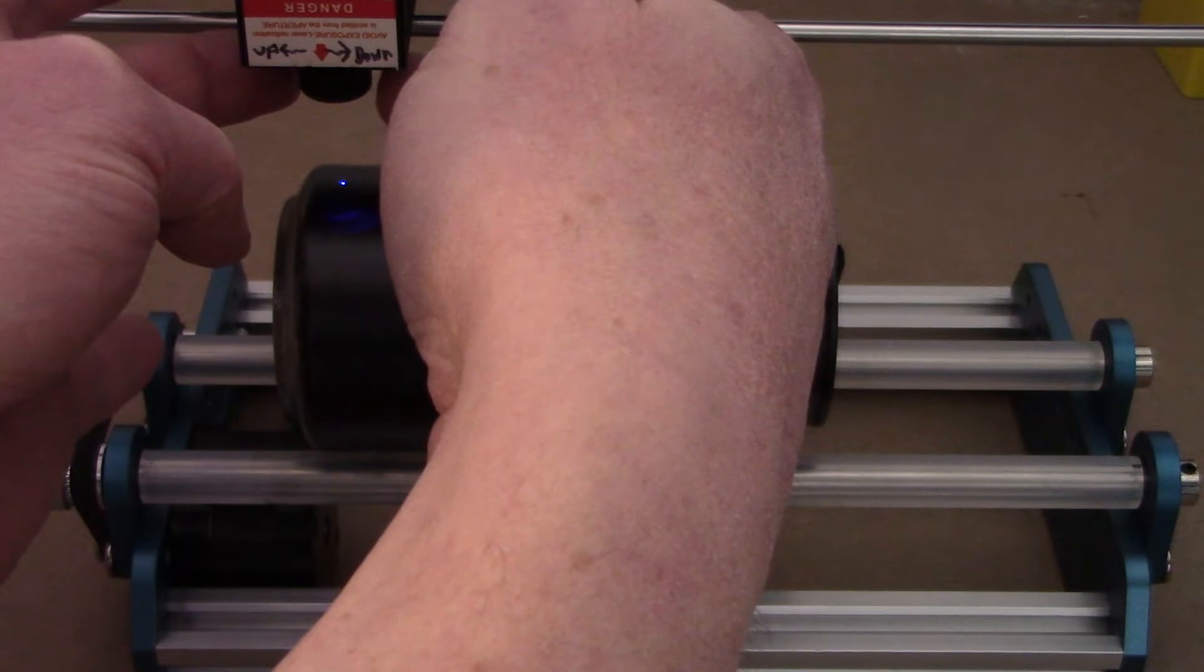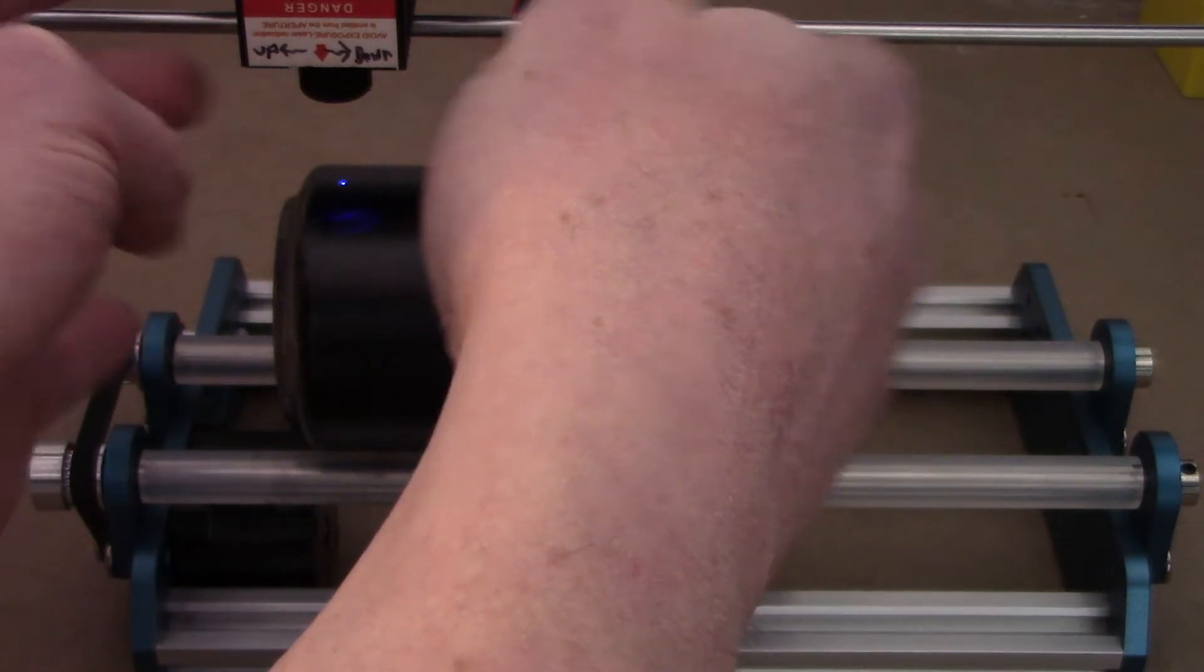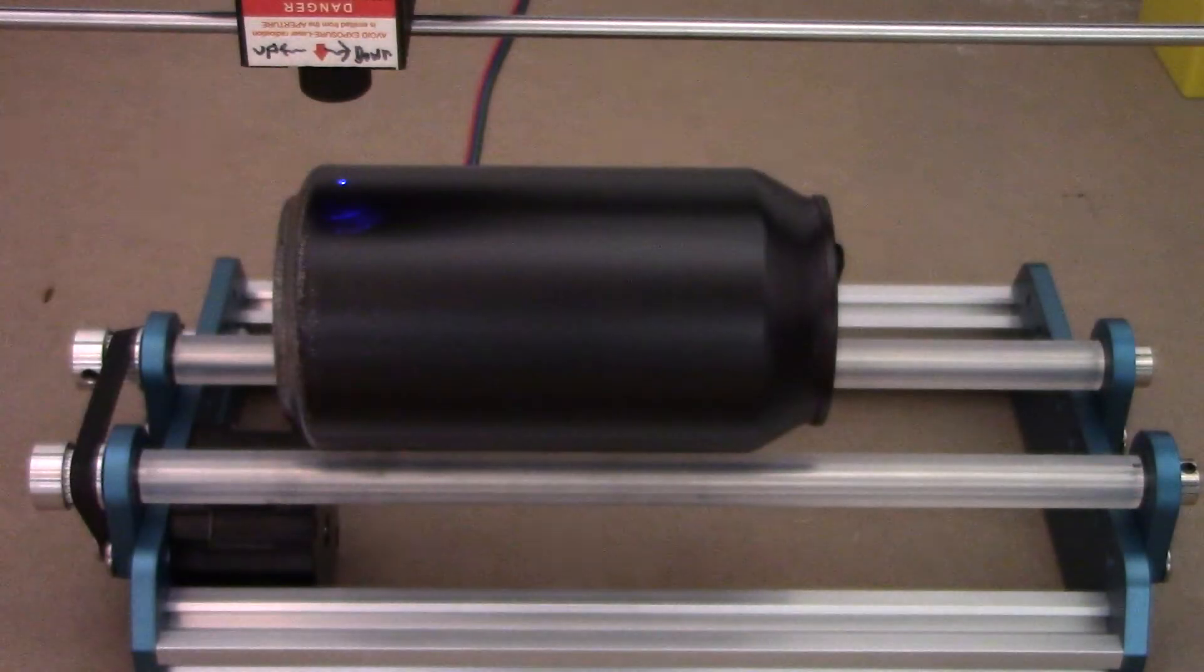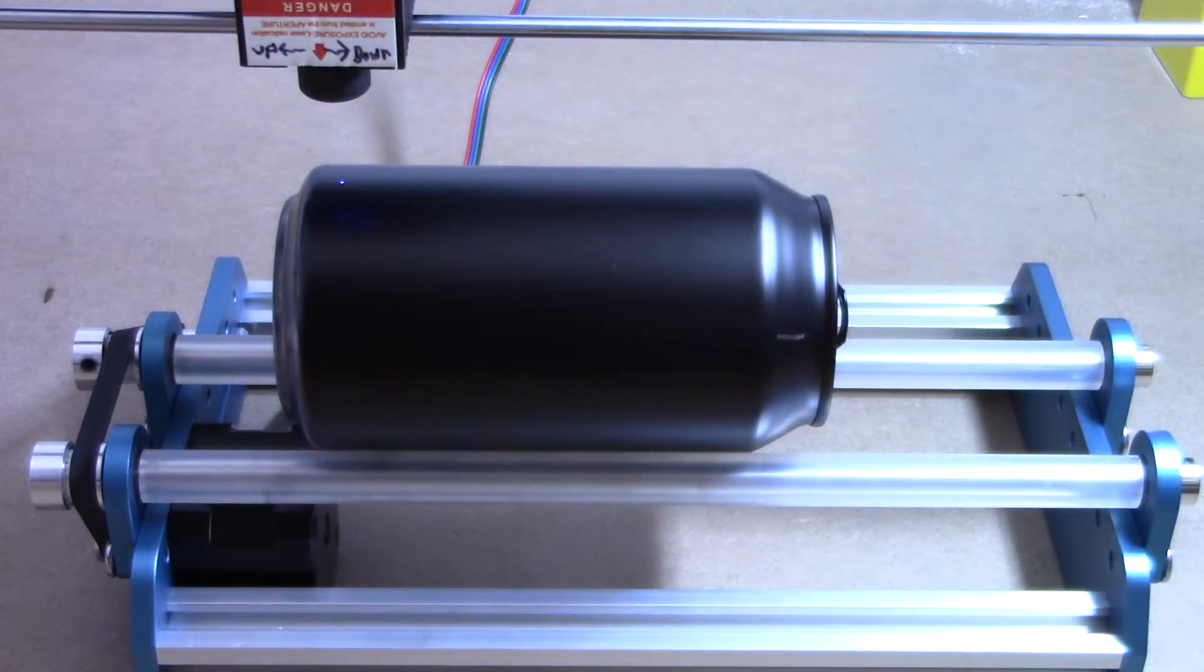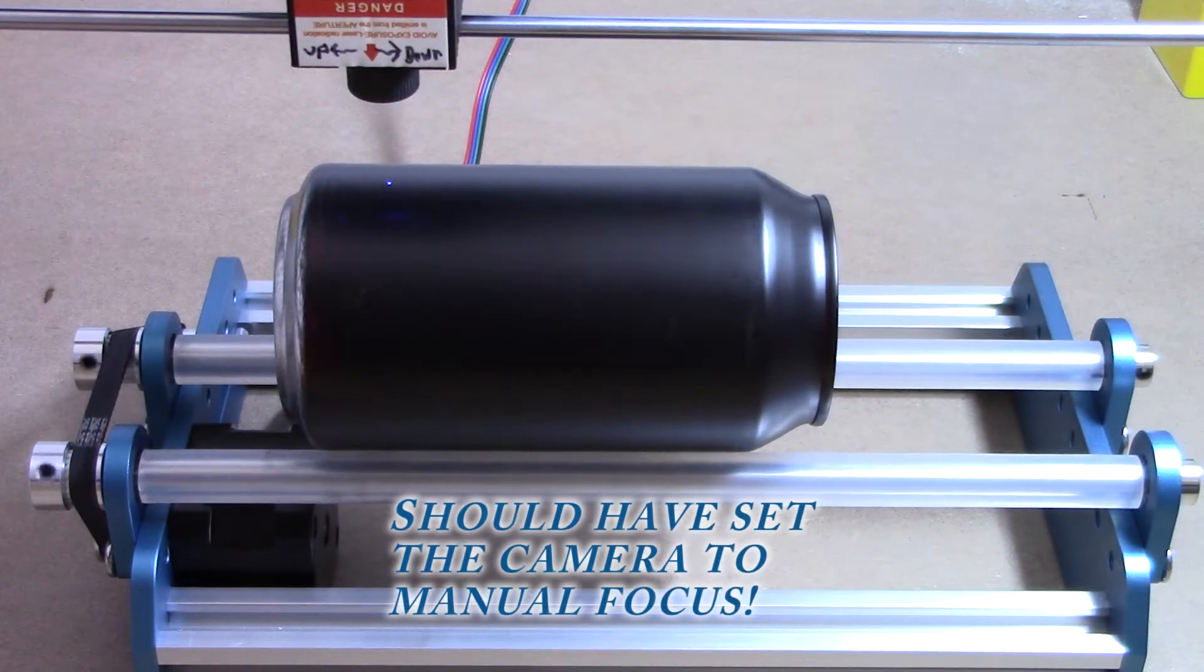I essentially took a rectangle that was the 207 point whatever millimeters, drew that up in Lightburn, and that should on the rotary tool then start burning, roll the can around completely 360 degrees and end burning. There ended up being a little bit of an overlap so I made some adjustments until I came up with that 37 number that worked perfectly.